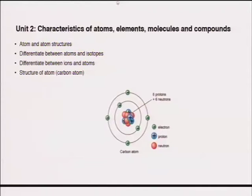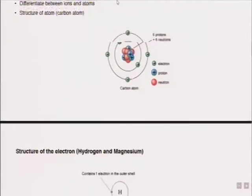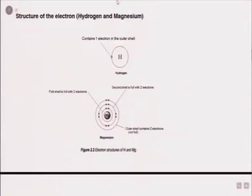You also need to be able to differentiate between atoms and isotopes, and between atoms and ions. Importantly, ions are only formed when atoms lose or gain electrons. How atoms lose or gain electrons depends on where they are situated in the periodic table. I have used hydrogen and magnesium to demonstrate how electrons are found in the different shells of the atoms.